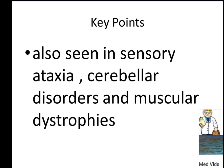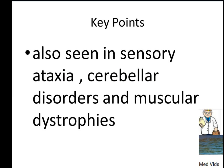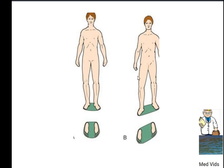Wide-based gait — the name tells you the base is wide. Key points: it is also seen in sensory ataxia, cerebellar disorders, and muscular dystrophies. Compared to normal gait, the gap between the feet is much wider in wide-based gait. This is the abnormal gait pattern associated with these conditions.